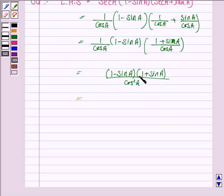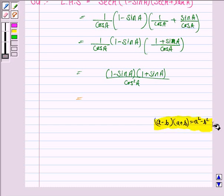Now here we'll be using the formula A minus B into A plus B is equal to A square minus B square. And here A is 1 and B is sine A.